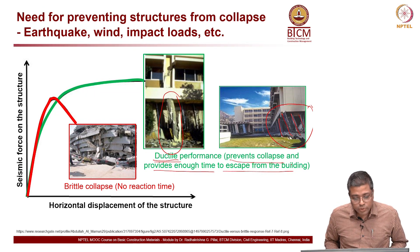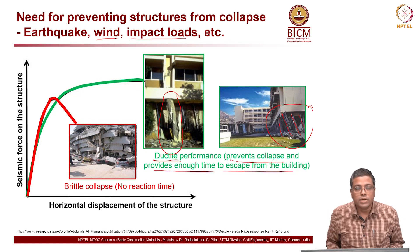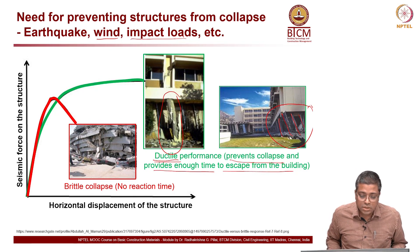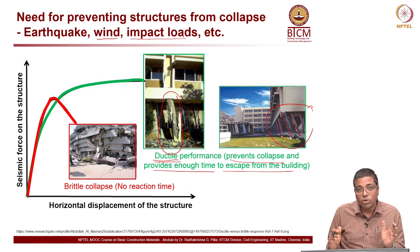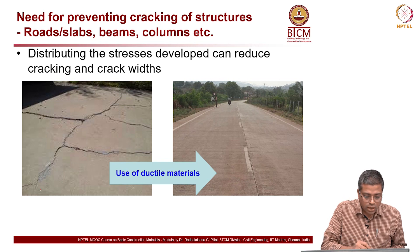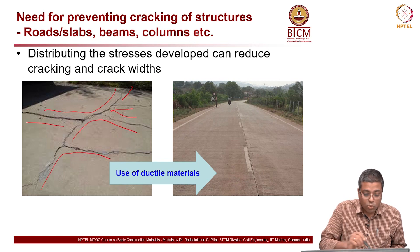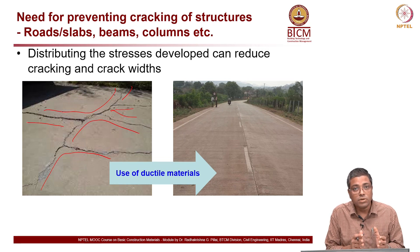How do we achieve this, and what type of materials should we use? This is not only for earthquake loads but also for wind and impact loads — another case where we need ductile materials to save lives. Even the structure can be retrofitted if it is only deformed and not collapsed. This is another type of structure — a road structure — where you can see wide cracks on the left side, mainly because plain concrete is brittle in nature.